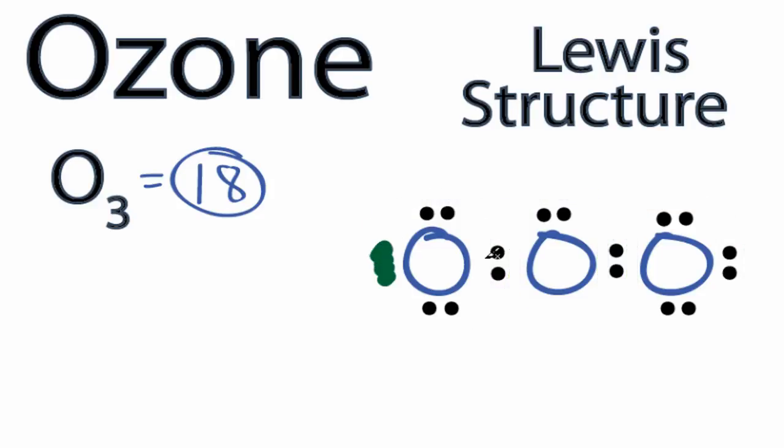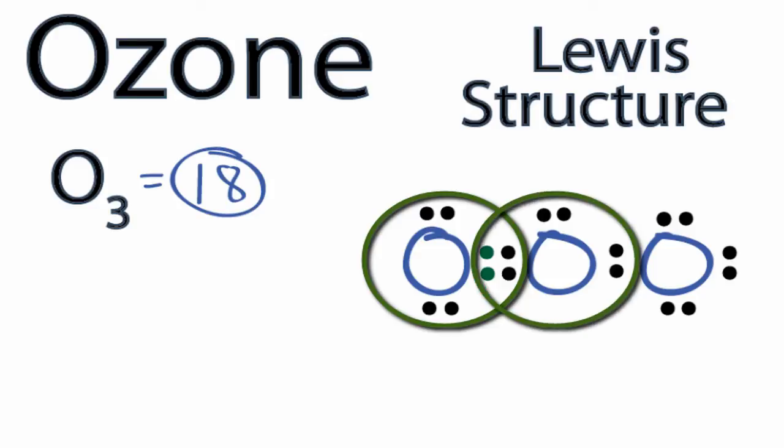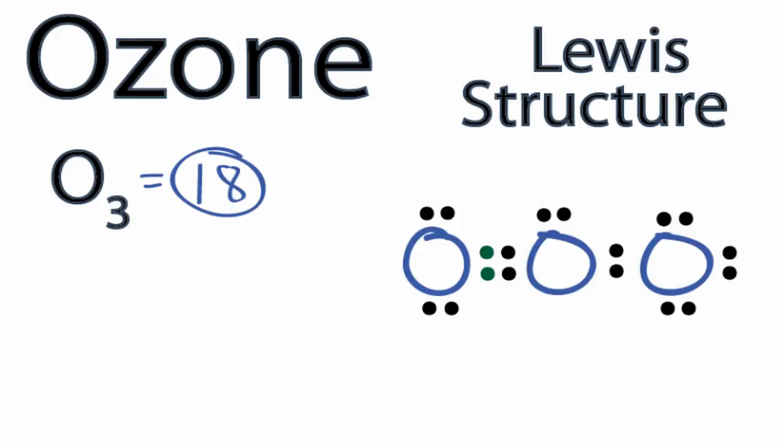Let's take these two valence electrons here and share them between oxygens to form a double bond. Now the oxygen on the end still has eight valence electrons, but the oxygen in the center also has eight valence electrons. And we're still using the 18 valence electrons we have for the ozone Lewis structure.